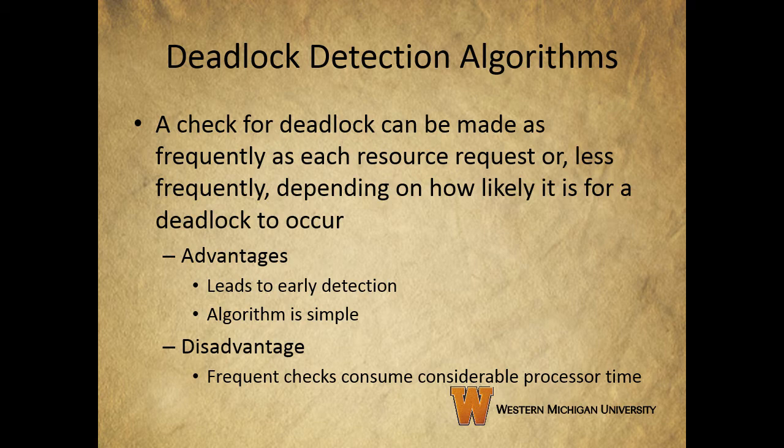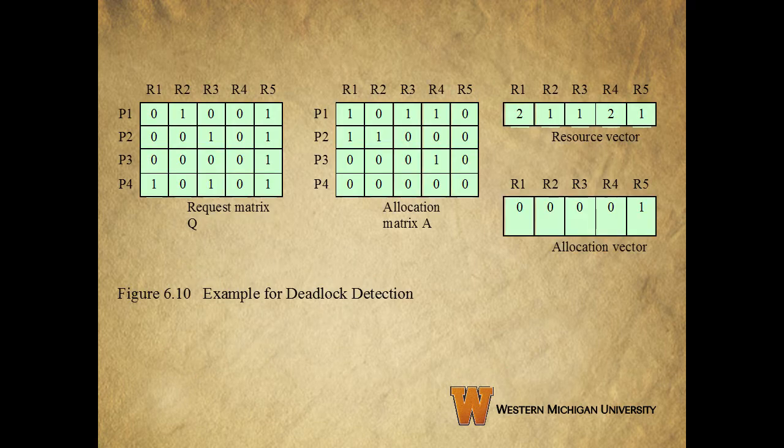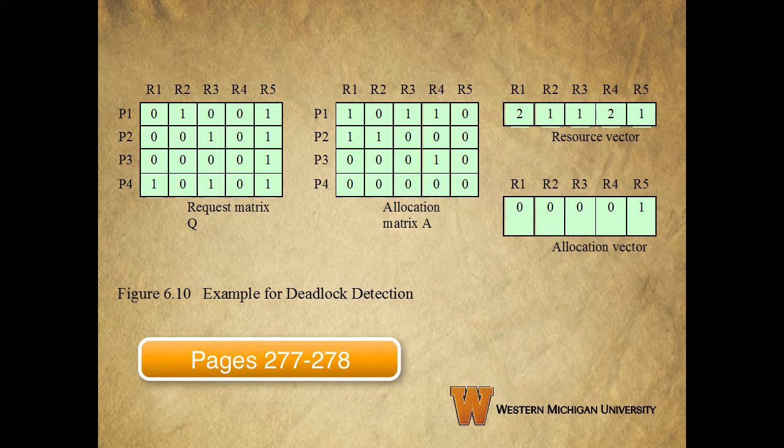Frequent checks are going to affect your performance. There's a great walkthrough on page 277 of your book that goes through an example for deadlock detection.